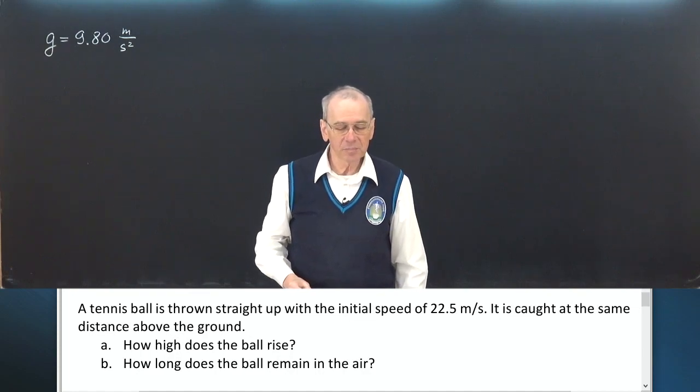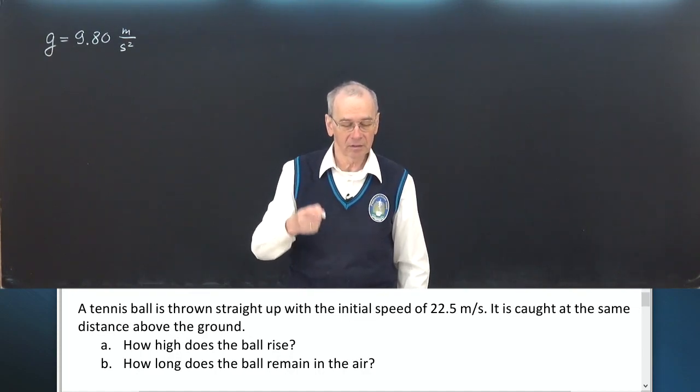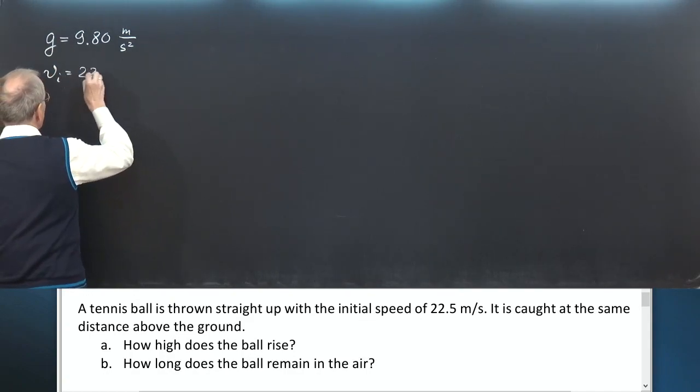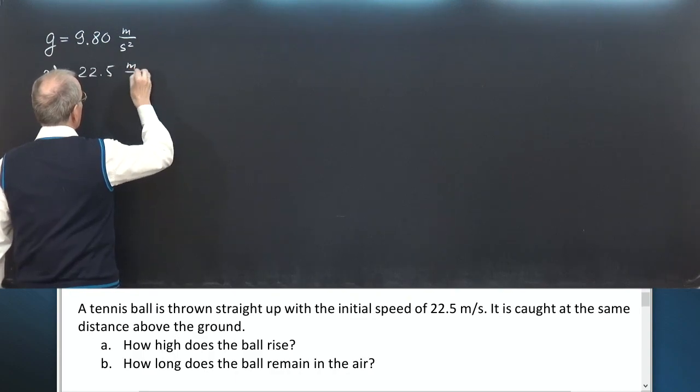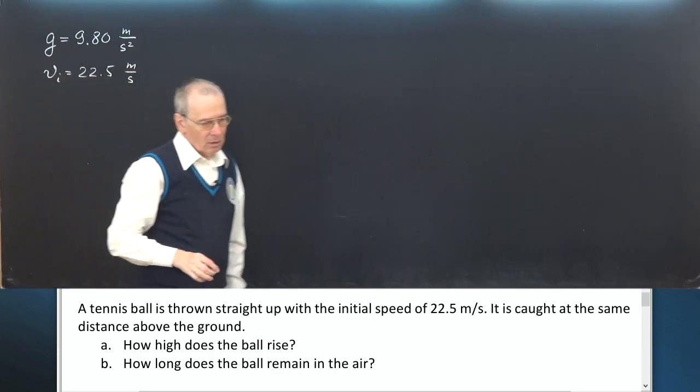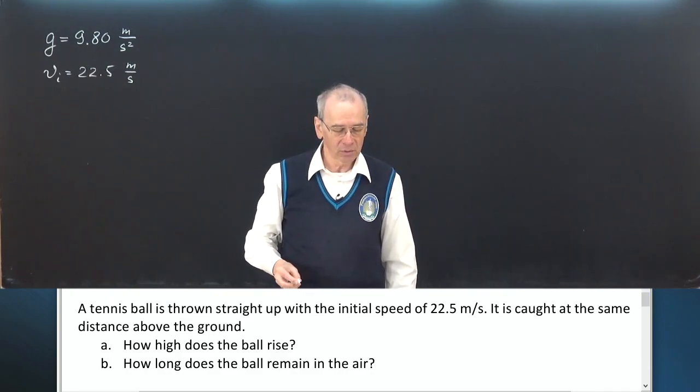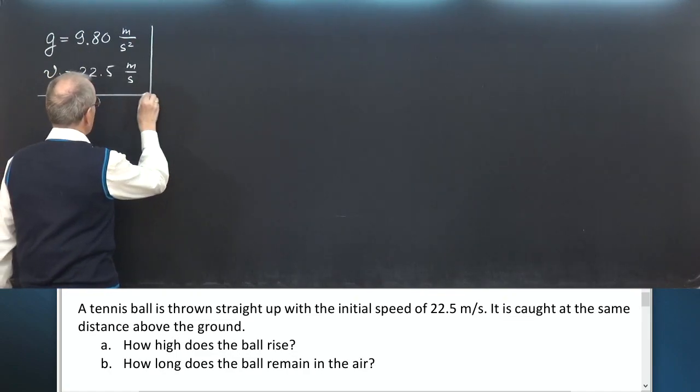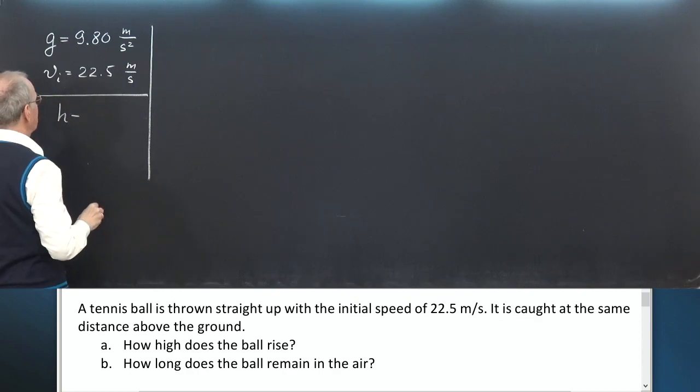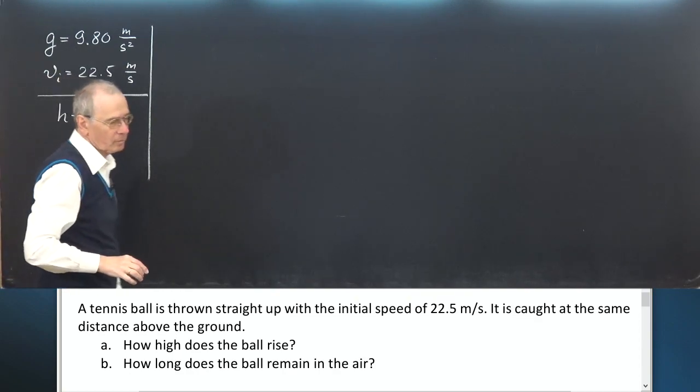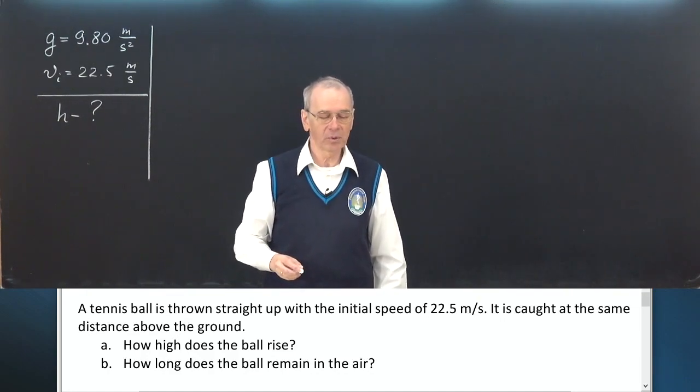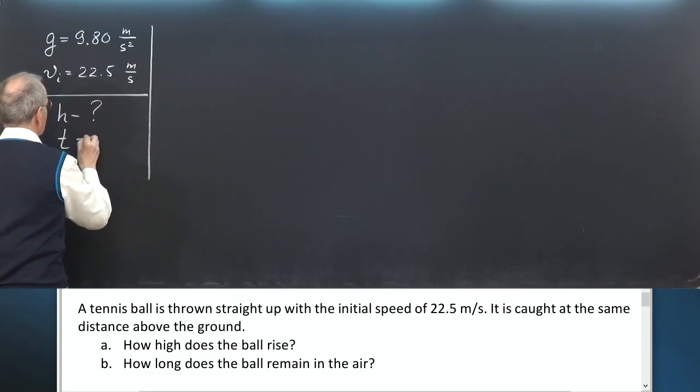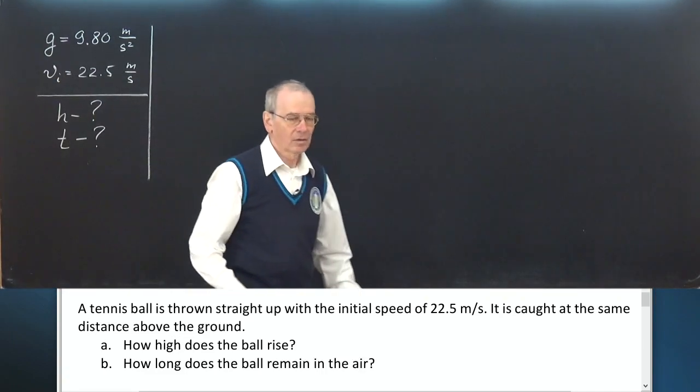The initial speed of the tennis ball is 22.5 meters per second. How high does the ball rise? Let H stands for height. How long does the ball remain in the air? Let T stays for duration of the free fall.